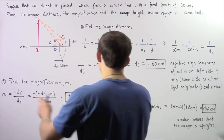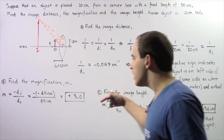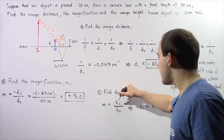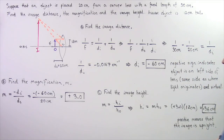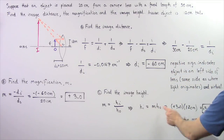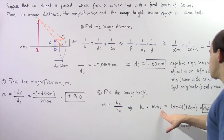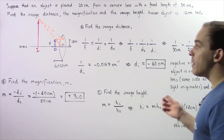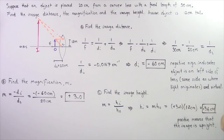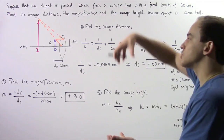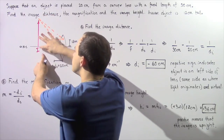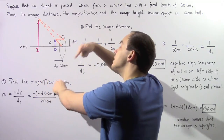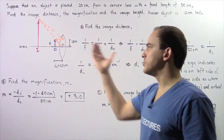Finally, in part C, we use the result from part B to find the image height. Another way to calculate magnification M is to take the ratio of Hi to Ho, where Hi is the image height and Ho is the object height. Multiplying both sides by Ho, Hi equals M multiplied by Ho. M is positive 3 and Ho is 12 cm, so 3 multiplied by 12 gives us positive 36 cm. The positive sign means our image is upright, and since 36 cm is greater than our original height of 12 cm, the image is magnified — three times the size of the original object.